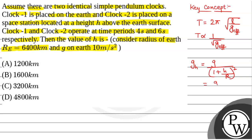The acceleration due to gravity at height h is given by g / (1 + h/r)², which is equal to gR² / (R + h)². From here, we can see that g is inversely proportional to (R + h)².